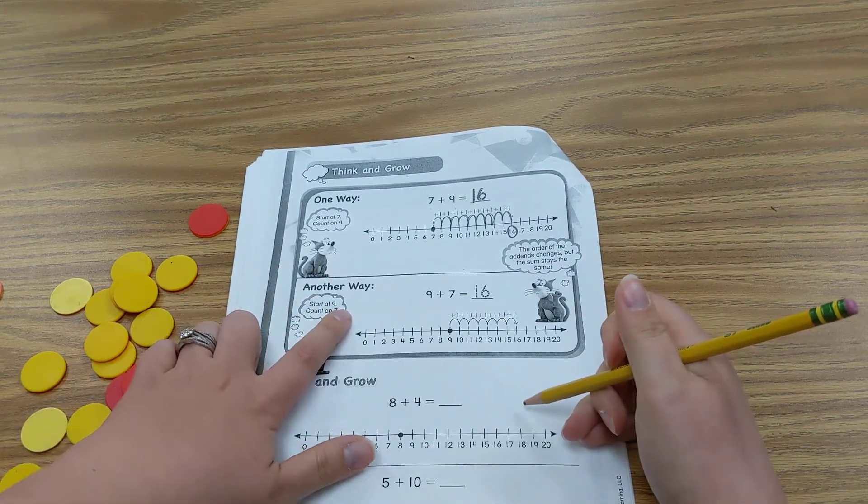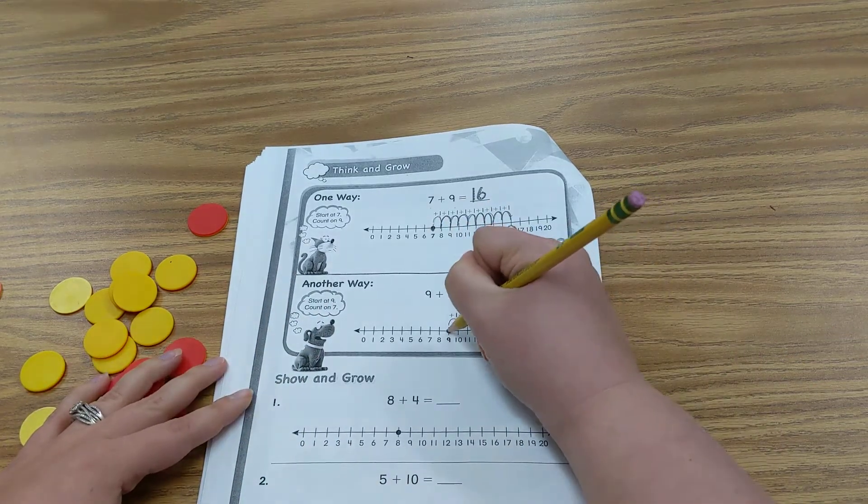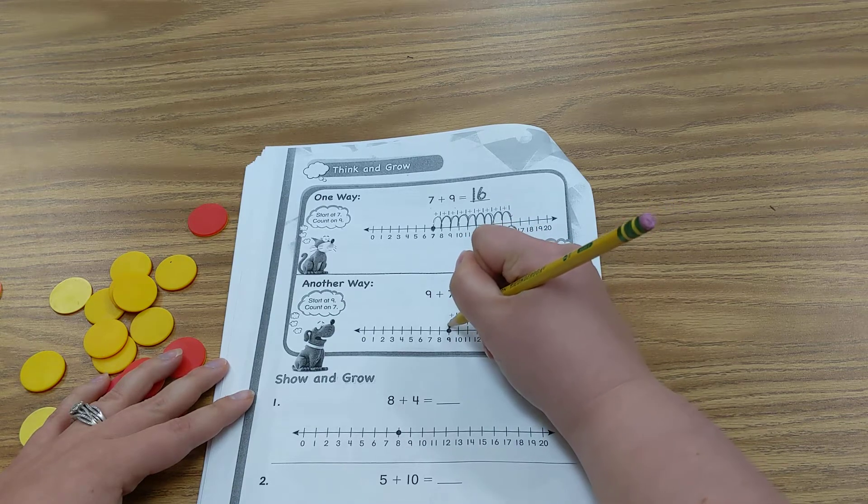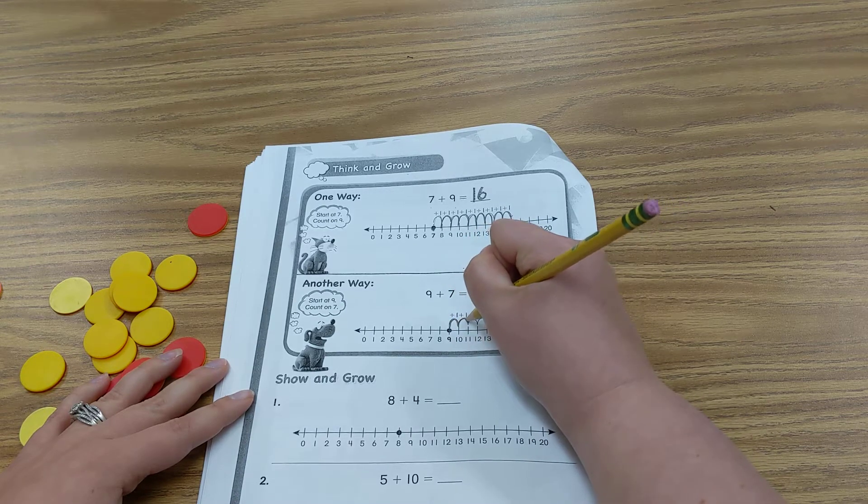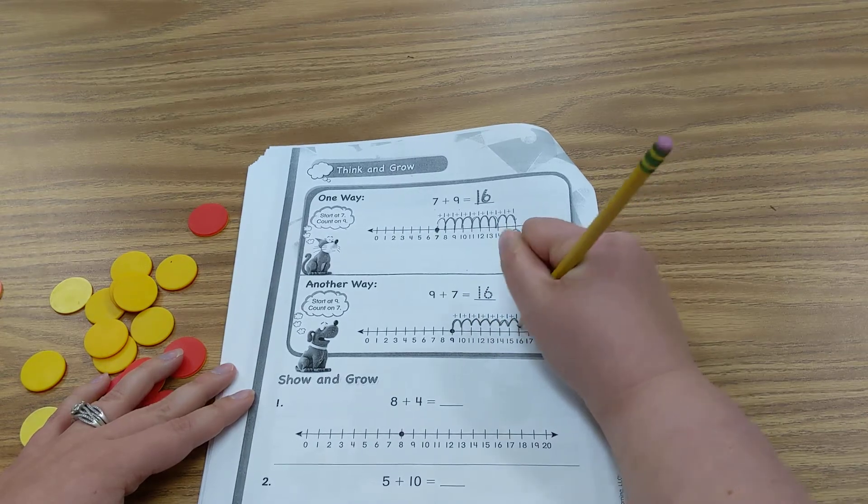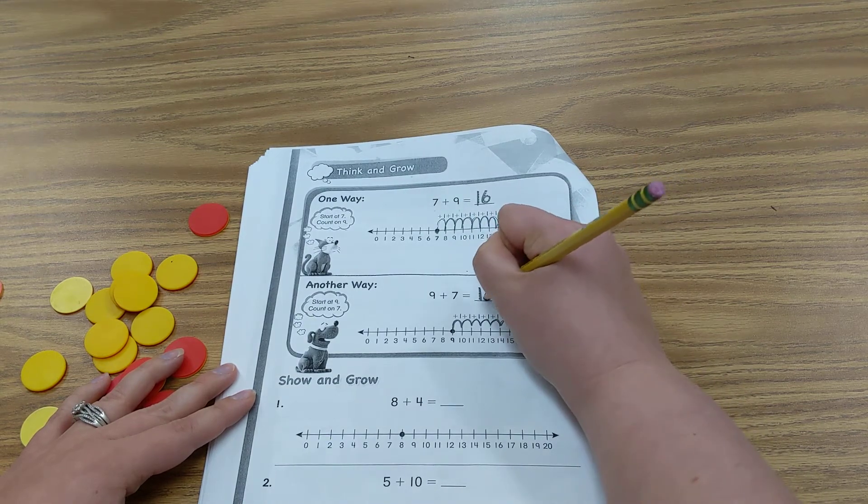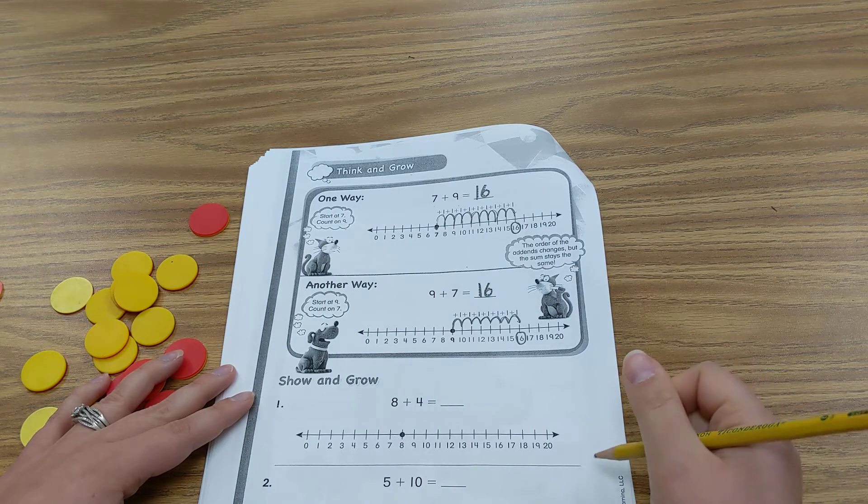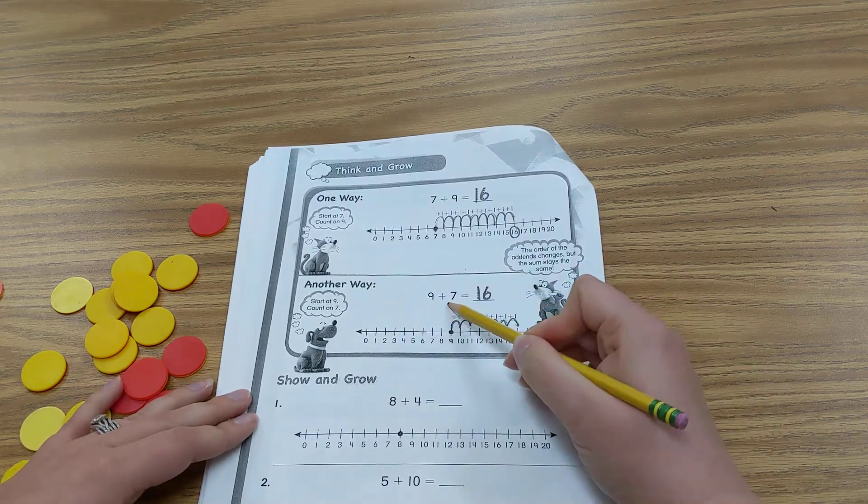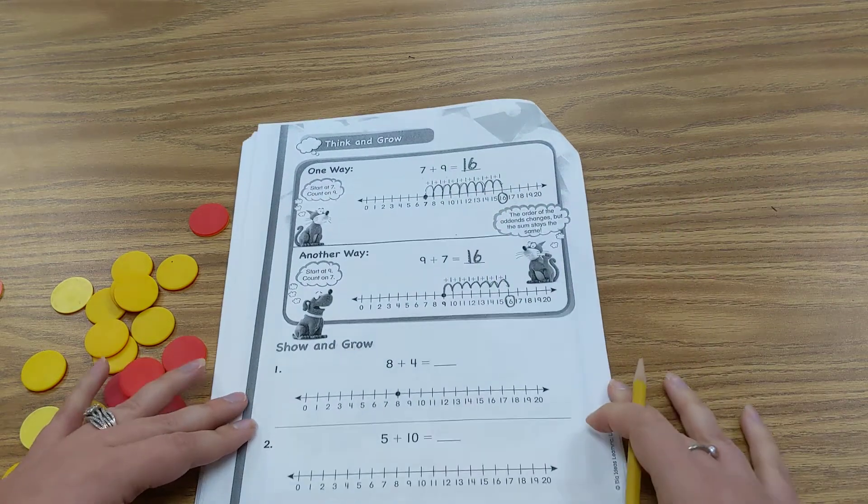Another way. Start at 9 and count on 7. So we start at 9 and add 7 more. 1, 2, 3, 4, 5, 6, 7. Our answer is still 16. The order of the addends changes, but the sum stays the same. Addend, addend, sum.